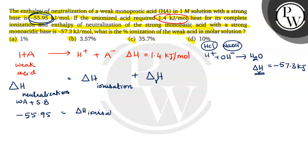its value is -55.95 is equal to delta H ionization. We need to find this out. And plus delta H neutralization of strong acid and strong base. Already I wrote the value here. That is -57.3 kilojoules.